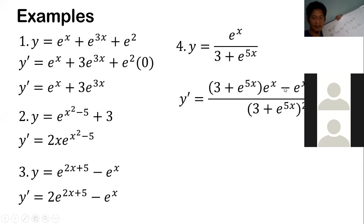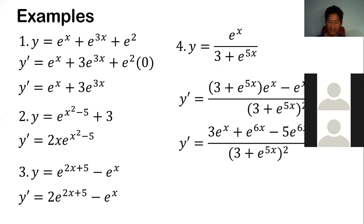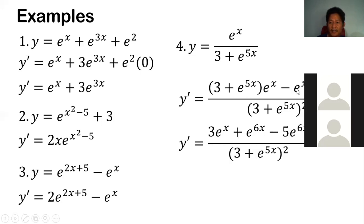So that gives us (3 plus e to the 5x) times e to the x, minus e to the x times 5 times e to the 5x, all over (3 plus e to the 5x) squared. When we distribute and simplify using the same base exponent rule (x plus 5x = 6x), we get 3e to the x plus e to the 6x minus 5e to the 6x.